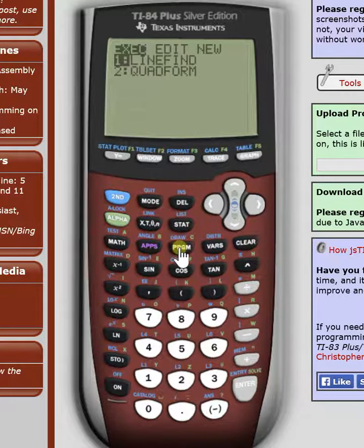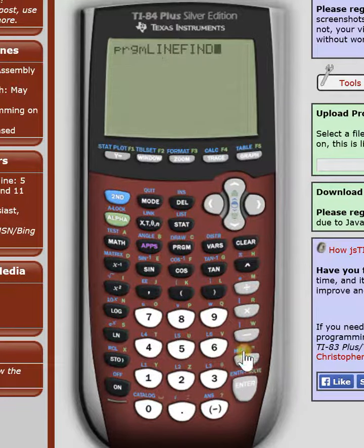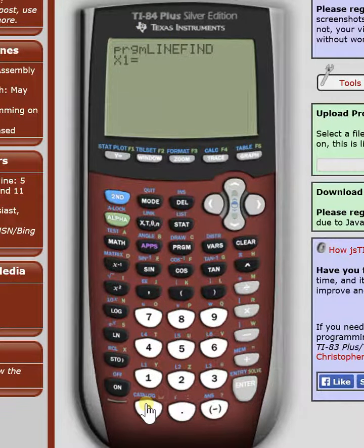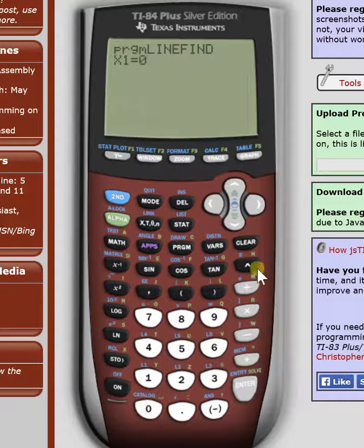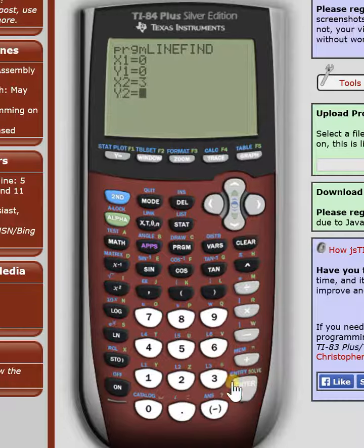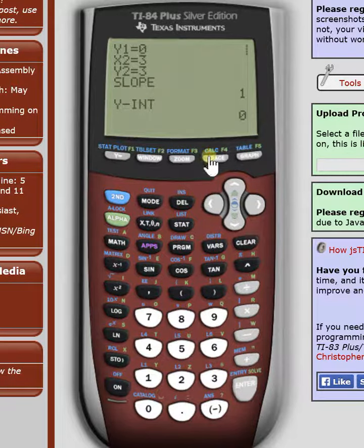So, let's test that out. Hit the program. Line find. Comes up first. Enter again. We're going to do a simple one to make sure it works. Just put 0, 0 for a first coordinate pair. And, 3, 3 for a second coordinate pair. Slope, y-intercept. That's right.